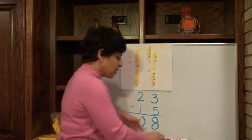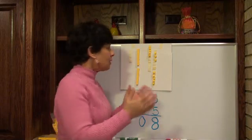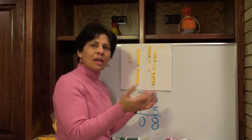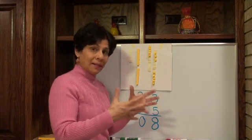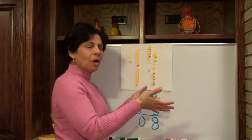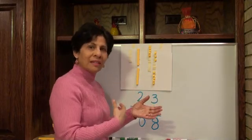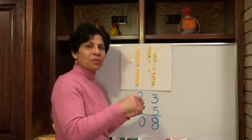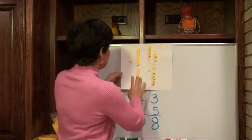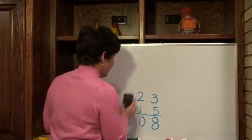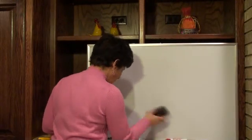Now what happens is when you get a worksheet of just problems, you kind of forget, what am I trading for what? How many do I need? So I'm going to tell you a strategy. It's kind of like a story. Tell yourself the story over and over again. Let me take this away now, and I will erase this.